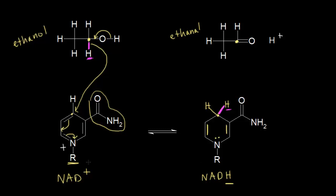Since NAD+ is reduced, it allows ethanol to be oxidized. And so we would refer to NAD+ as an oxidizing agent — it is the oxidizing agent for ethanol, even though it itself is being reduced. That's something that confuses some general chemistry students. This reaction is catalyzed by an enzyme — the enzyme is alcohol dehydrogenase.